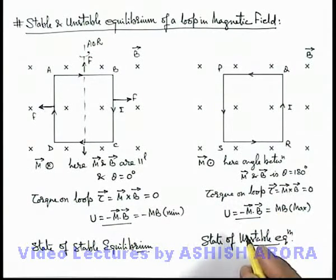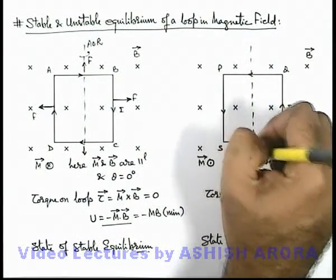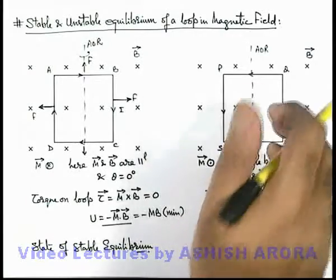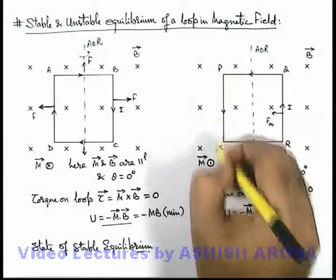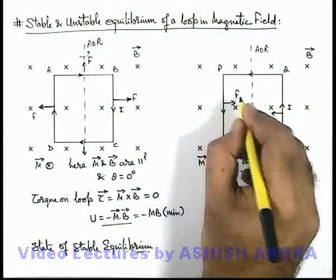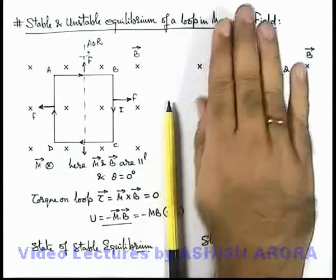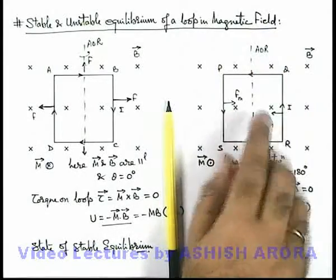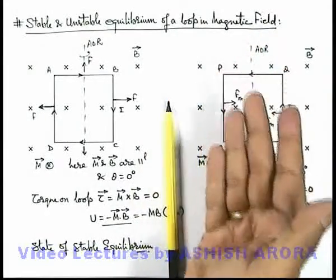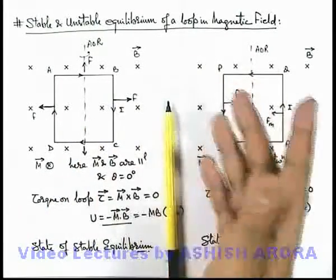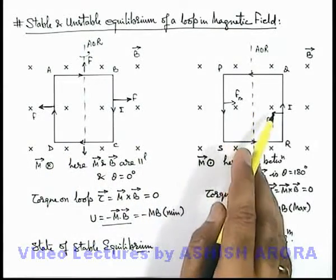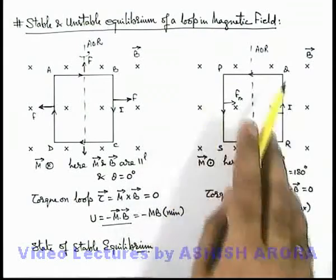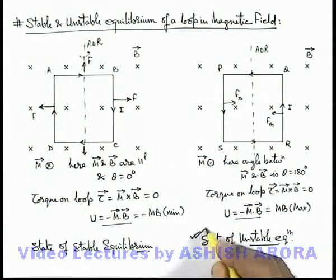This we can analyze by the direction of forces again. Considering an axis of rotation, the magnetic force on wire QR is in the inward direction, and on PS it is also in the inward direction. So if the coil is slightly tilted by an angle theta, the couple produced by these forces will continue to rotate the coil until it reaches the stable equilibrium position, where it will start oscillating. So if we slightly tilt the coil, the couple of magnetic forces will exert a torque on the coil in the direction away from this equilibrium position, which verifies that the state of equilibrium is unstable in nature.